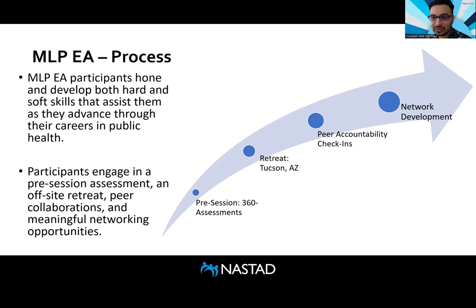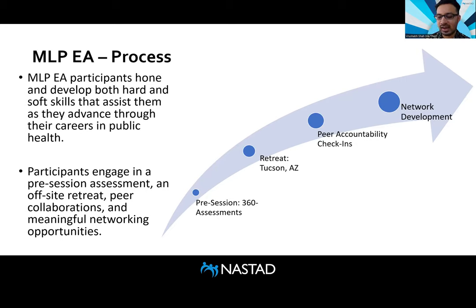The retreat will be held in Tucson, Arizona on August 5th through the 9th, 2024 — that is a Monday through Friday. Following the retreat, we're going to be building in new peer accountability check-ins. As part of the new content in MLP EA, we'll have a lot more accountability structures, challenges, and exercises built in for senior leaders to really act on, checked in on down the road beyond the retreat to make sure the information is implemented and their growth is supported. We don't want to leave anyone hanging — we want peers to continue to support each other throughout the entire program and beyond.